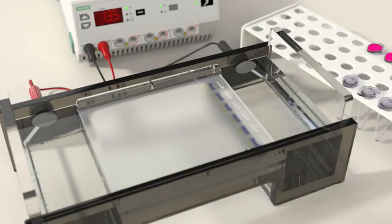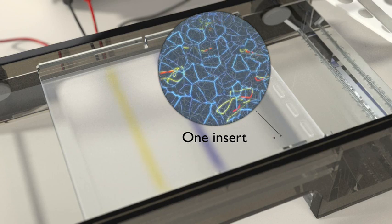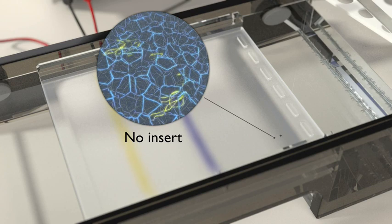Two principal factors affect how quickly a piece of DNA will migrate through agarose gel: its overall size and its shape. The larger the piece, the more slowly it will move. The more compact a fragment, the faster it will move.